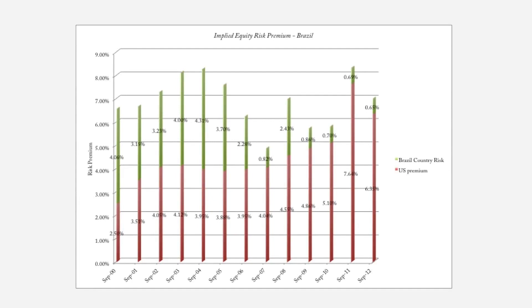I could also use an implied premium, though it's trickier because I need the same inputs for Brazil as for the U.S. — cash flows from the most recent year, the index level, and an expected growth rate, which might be a problem. But if I can get an implied premium for a market, I can bypass this process and directly estimate the equity risk premium going forward for that country. In this graph, I've mapped the implied equity risk premium for Brazil versus the U.S., and note how much the additional premium charged for Brazil has dropped over the last decade — Brazil is a lot less risky today, at least in the eyes of investors.